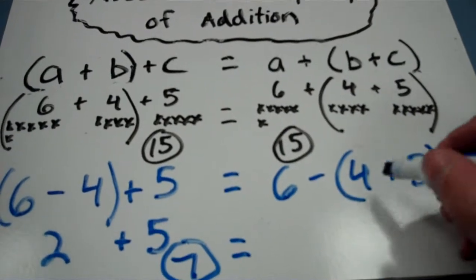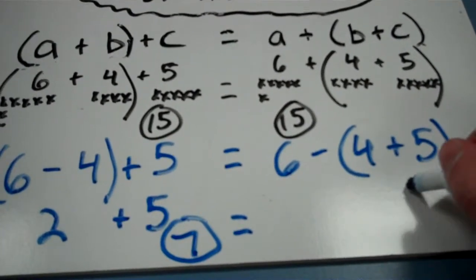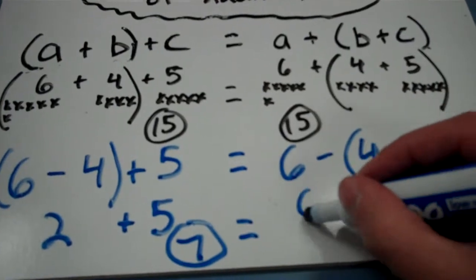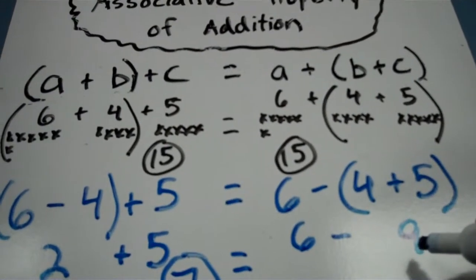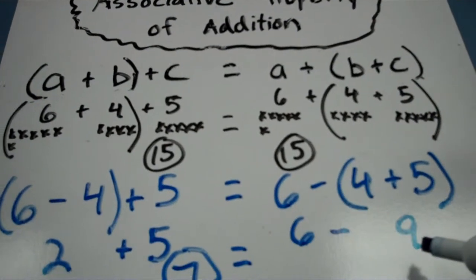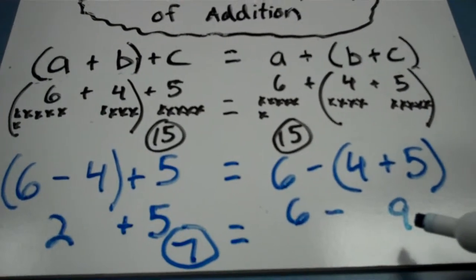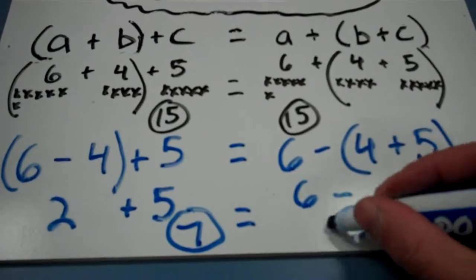This time I've got to do the 4 and 5 first, and 4 plus 5 is 9. Uh-oh. 6 minus 9. I'm starting with one number, and I'm subtracting a bigger number from it. That's going to give me a negative 3 for my answer.